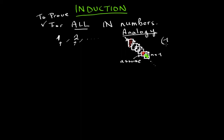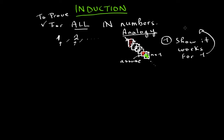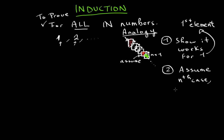Let me say it in simple language first. Number one: show it works for one, or if your set does not include one, show it for your first element. Number two: assume the nth case and prove — that is your proof — show the n plus one case.